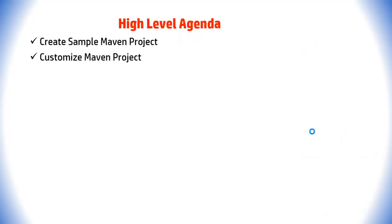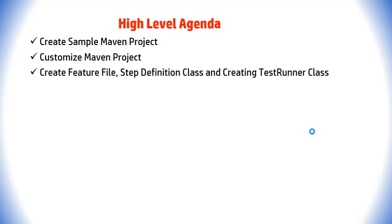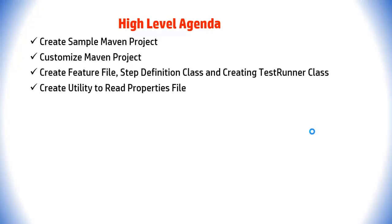First we will create a sample Maven project, then we will customize the Maven project. After that we will discuss how to create a feature file, step definition file, and test runner class. Finally we will be creating one utility method that reads the properties file, like URL and file path.